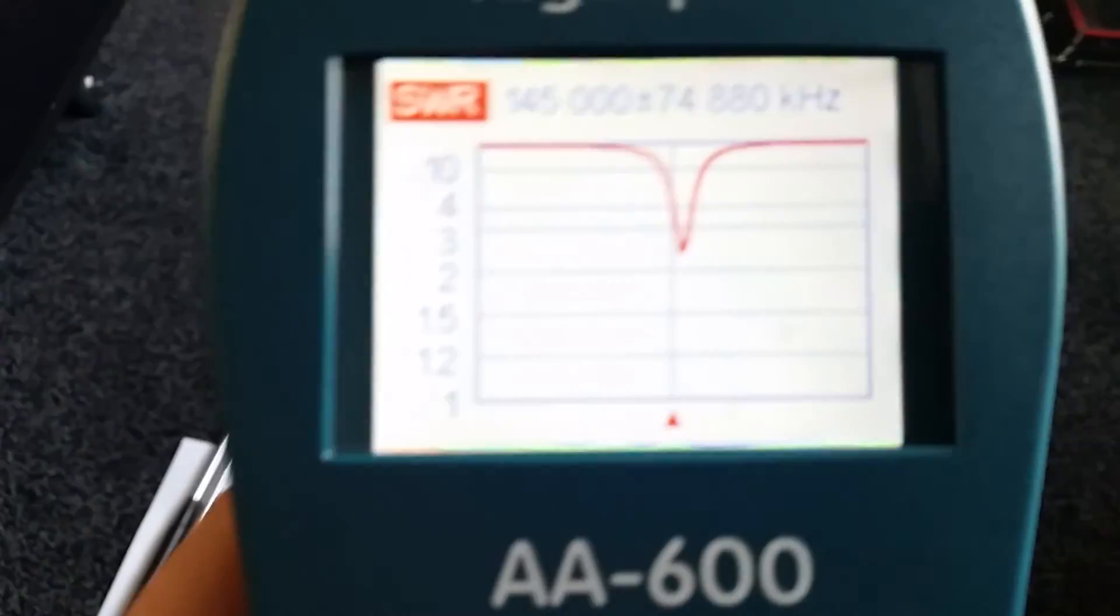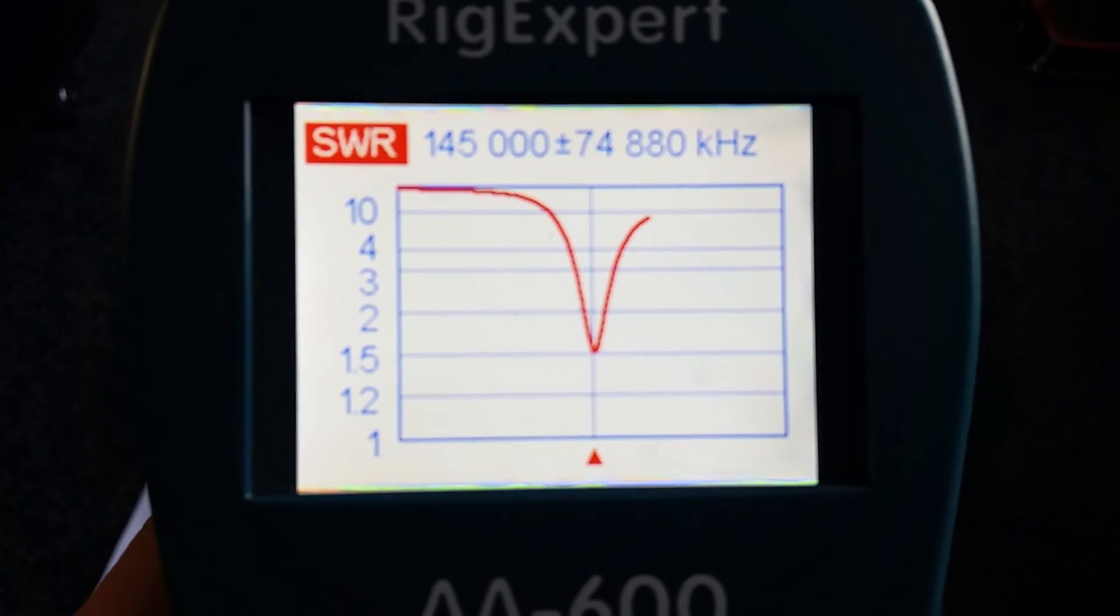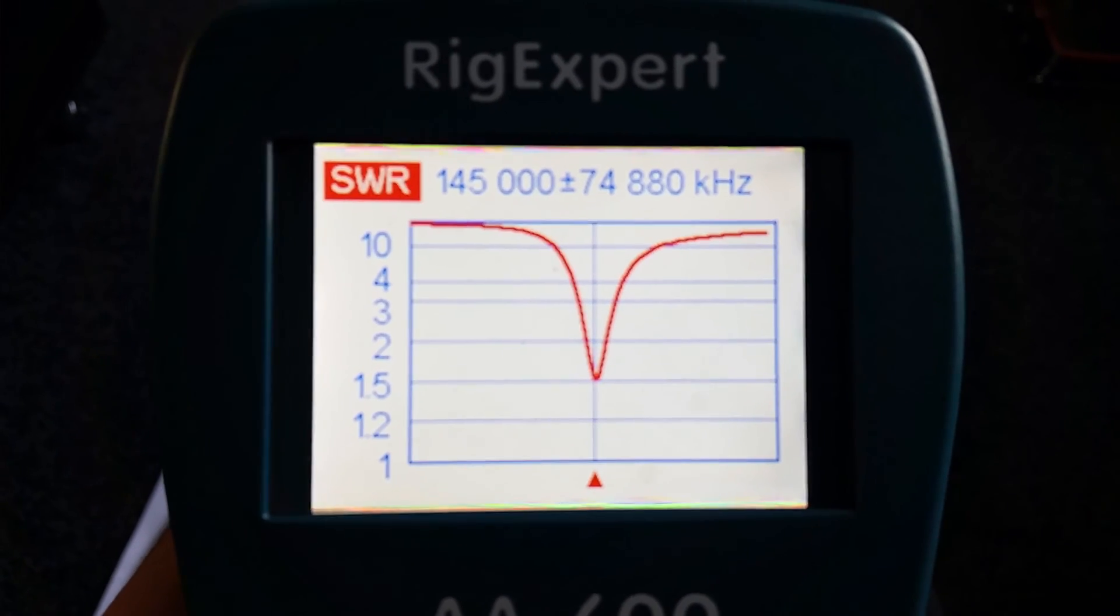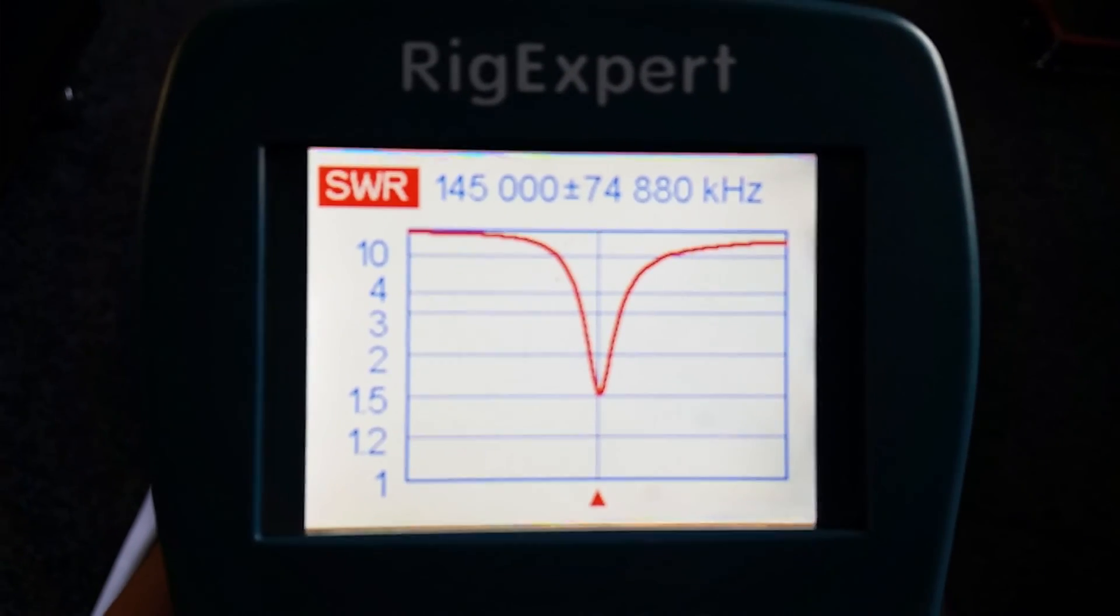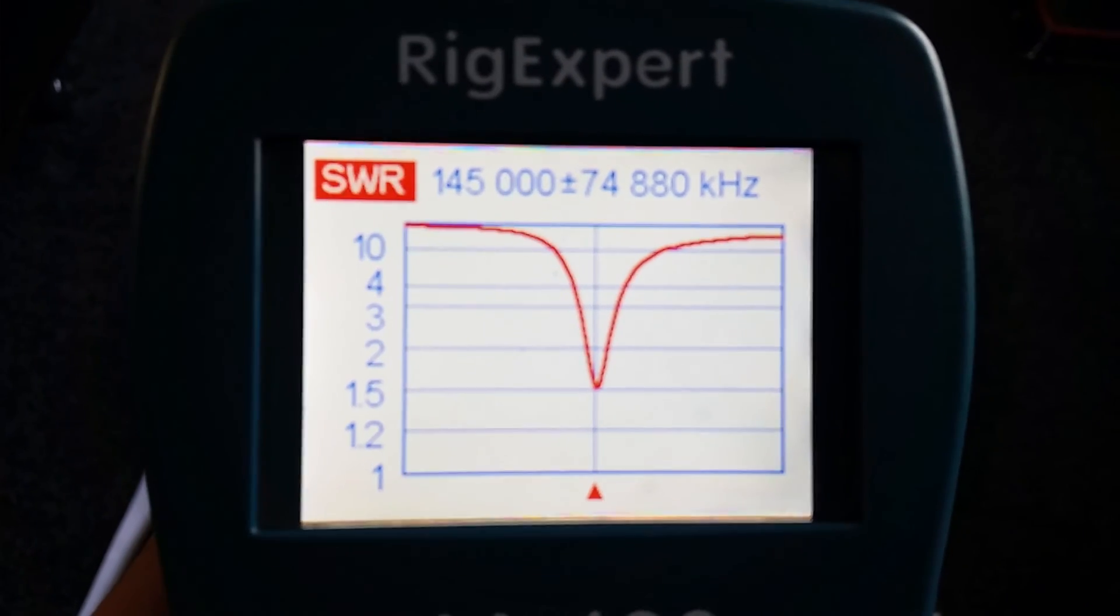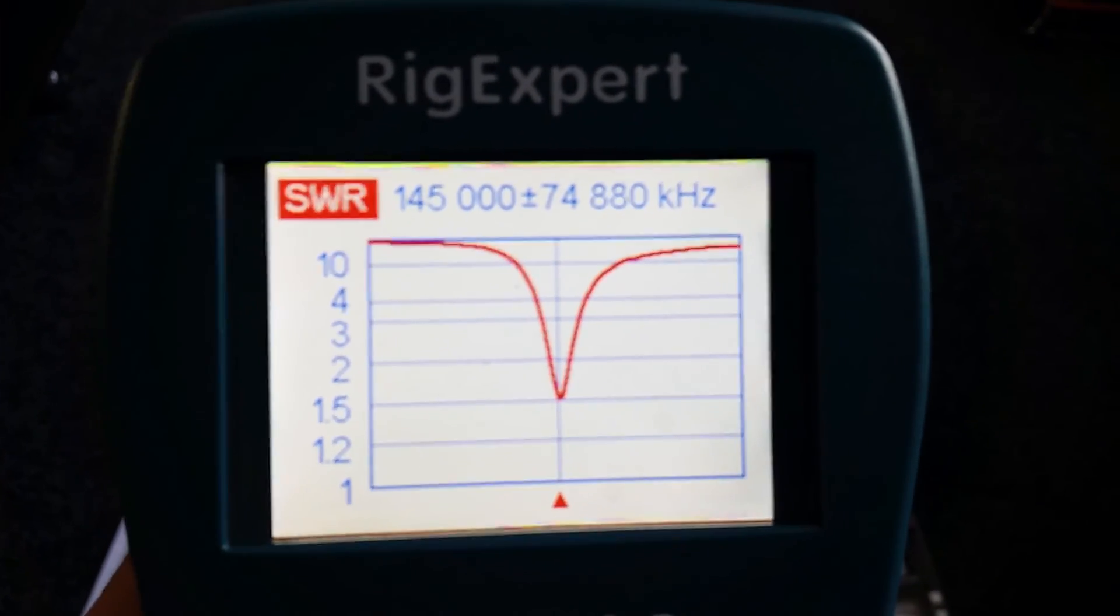which is also under 1.5. So for my conclusion, the Baofeng antenna from a £20 handset seems to be doing quite well.